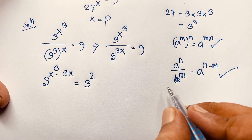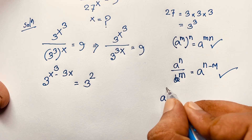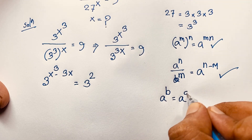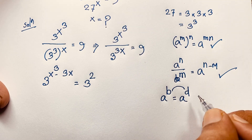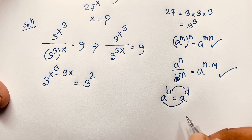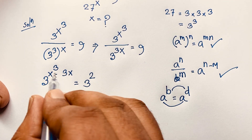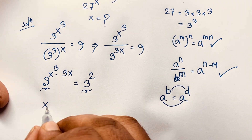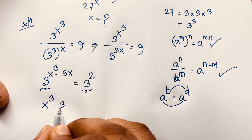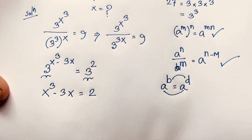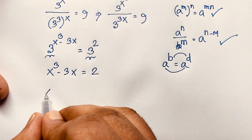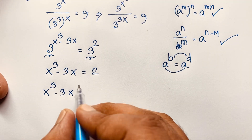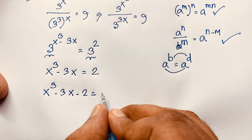By the exponential formula, if a to the power b equals a to the power d, then b equals d. Here the base is 3 on both sides, so I can equate the exponents. Therefore, x cubed minus 3x equals 2. Moving the 2 to the left side, we get x cubed minus 3x minus 2 equals 0.